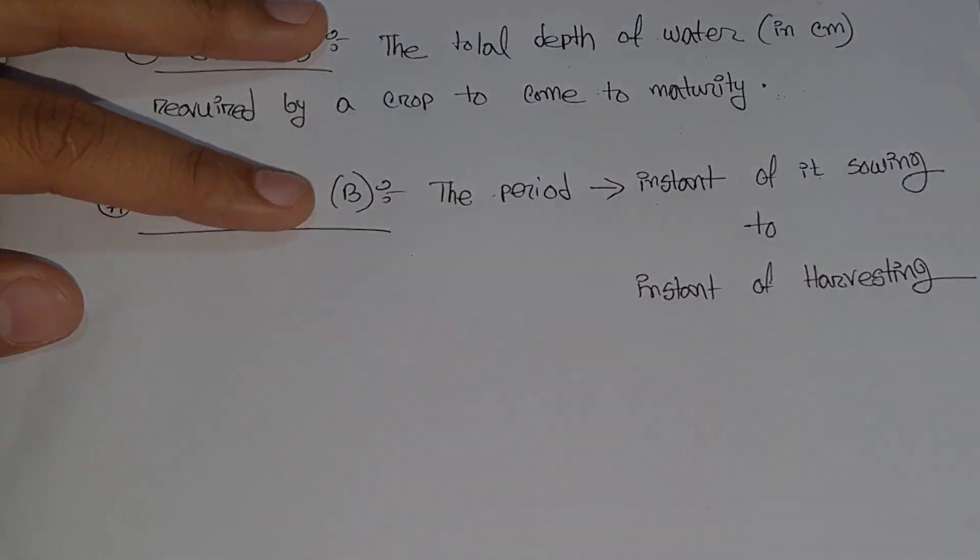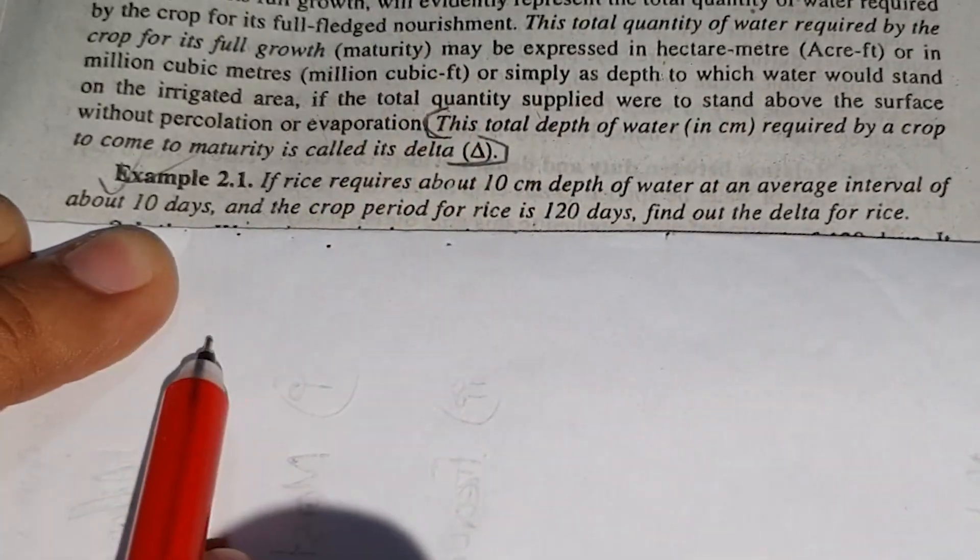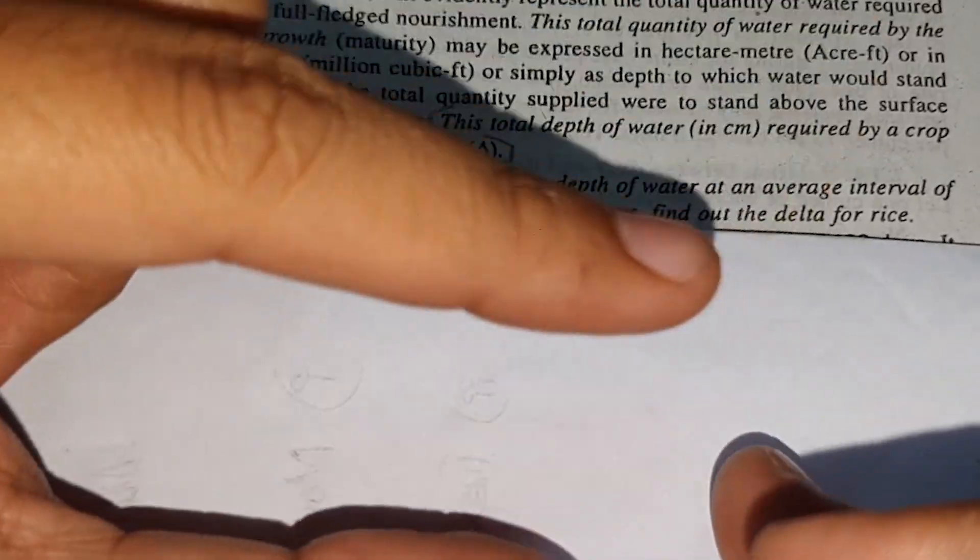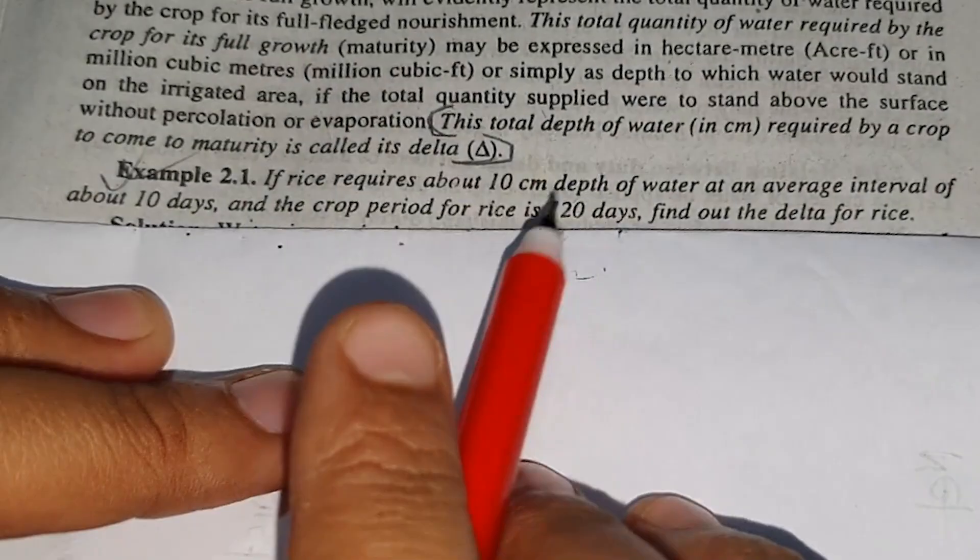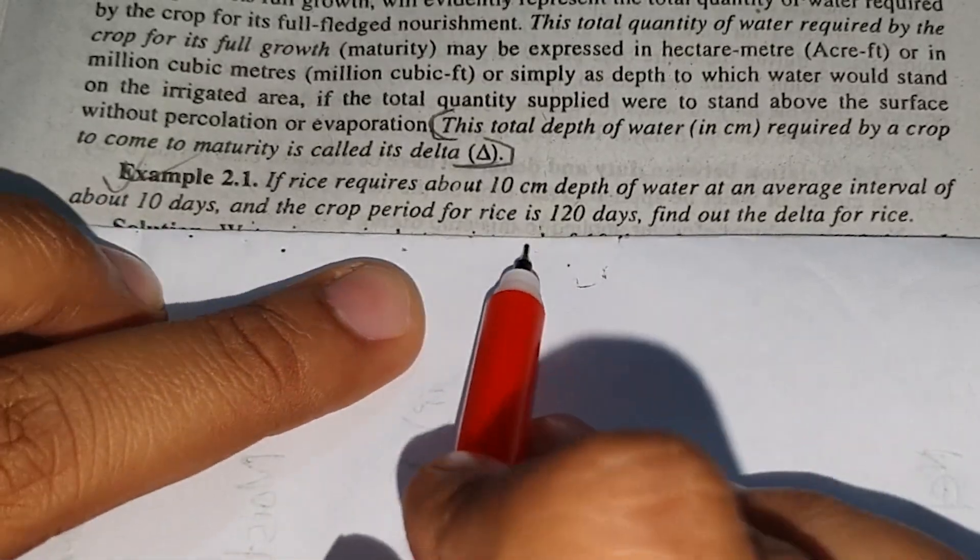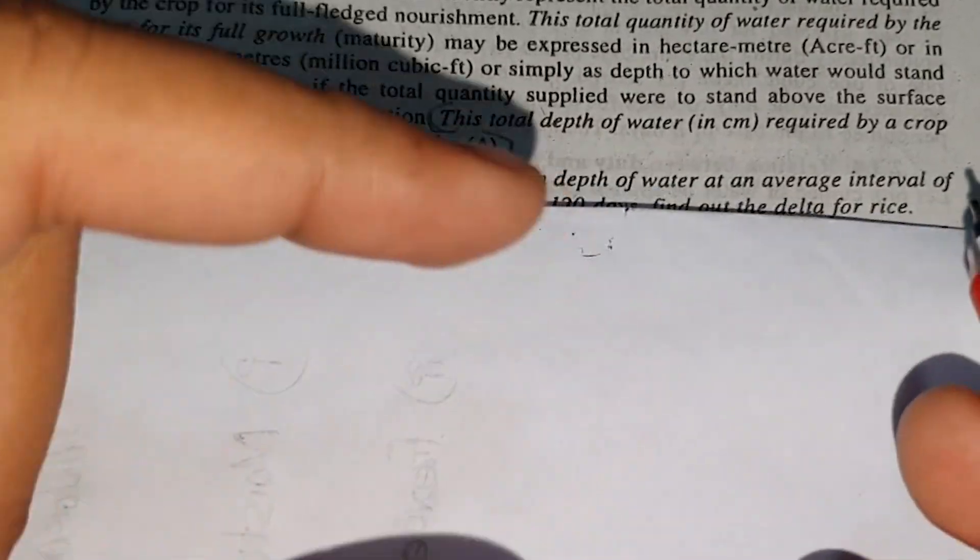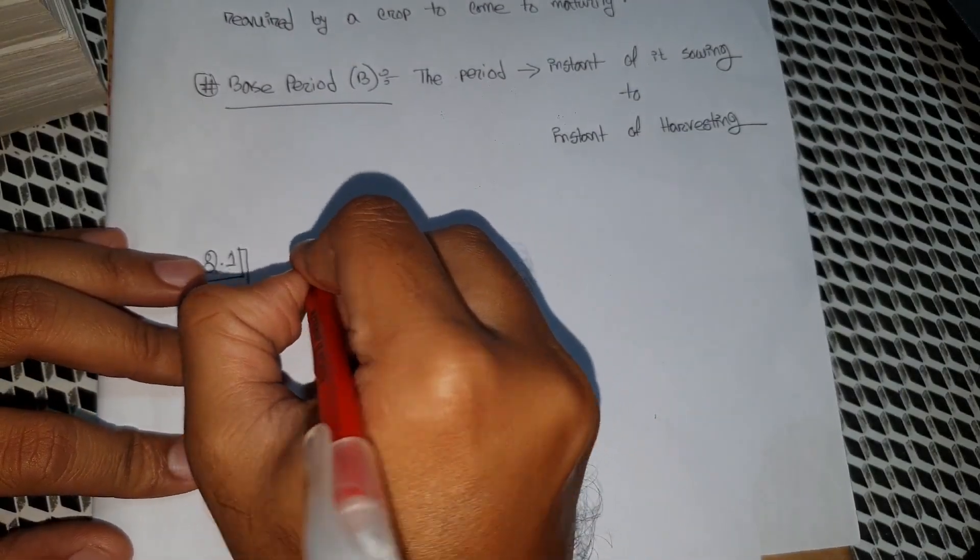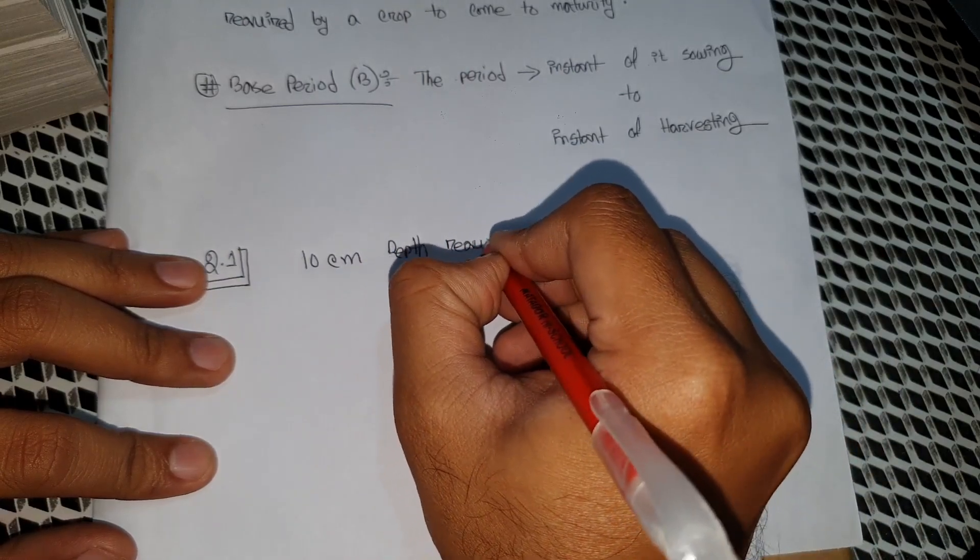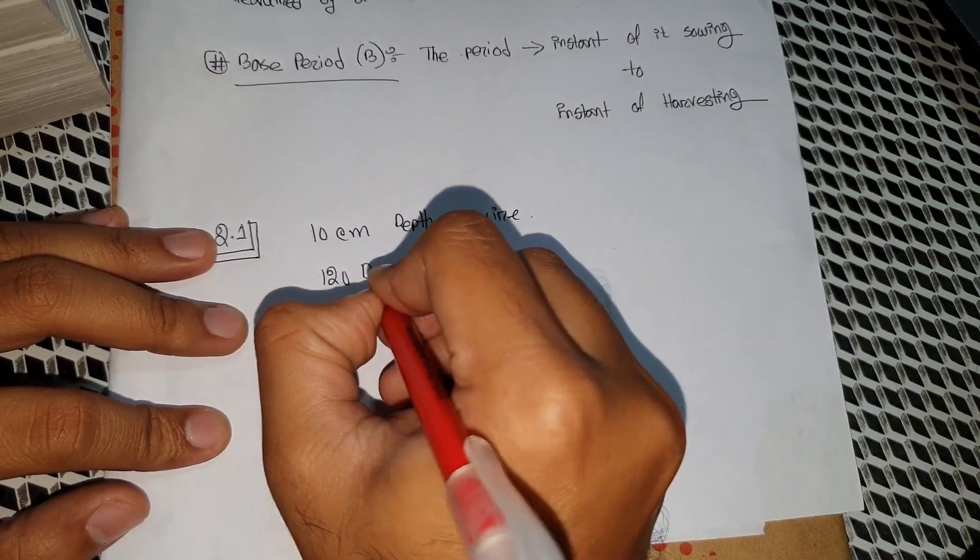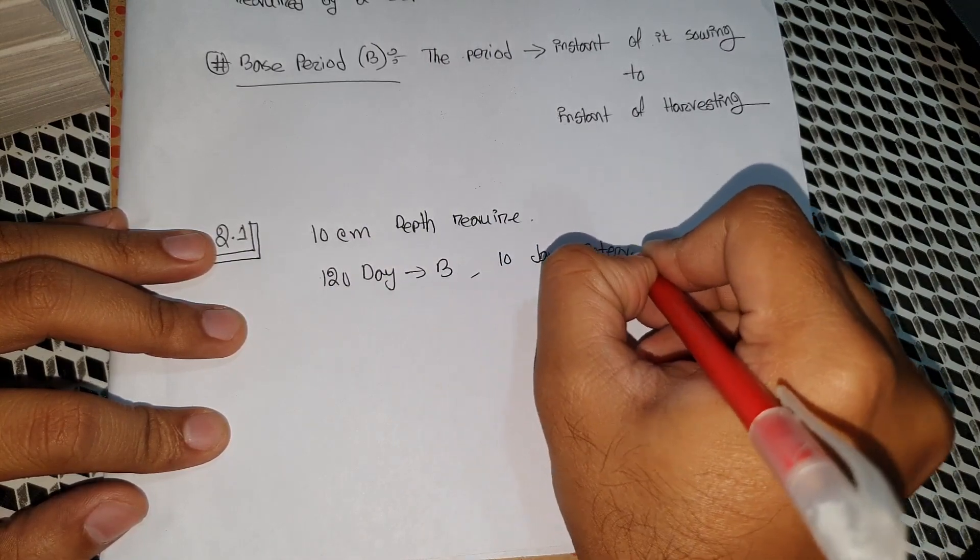Let's take a look at Example 2.1. Rice requires 10 cm depth of water every 10 days. We need to find the total depth of water required for the crop to reach maturity. The base period is 120 days with a 10 day interval.